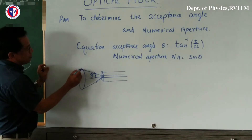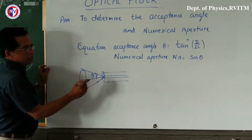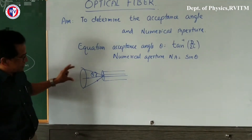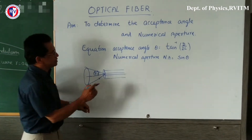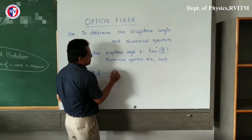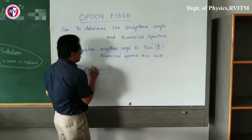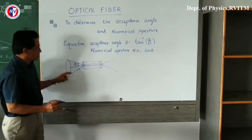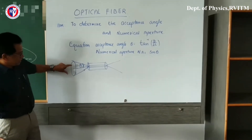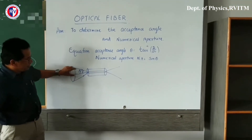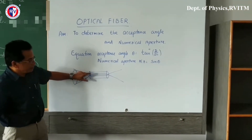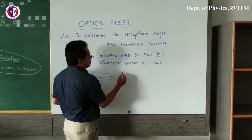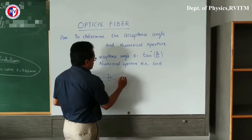This cone is called the acceptance cone and this angle is called the acceptance angle. Instead of measuring at the input side, what we do is — when the ray travels through the fiber and comes out, it exits at the same angle. So instead of measuring the radiation entering the optical fiber, we measure using the ray which is coming out.